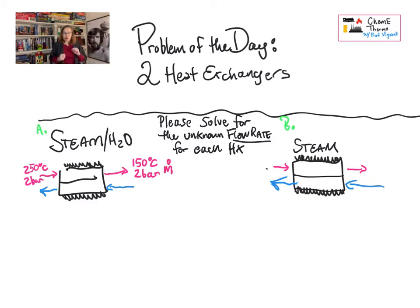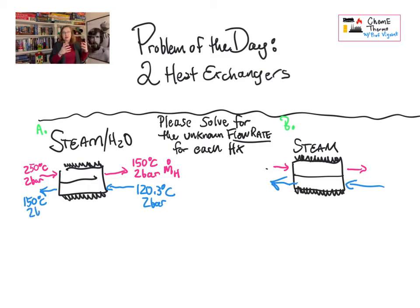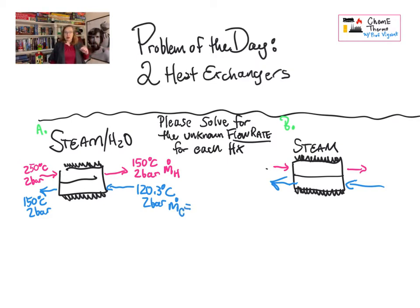We don't know its flow rate — its flow rate is unknown. On the cold side of heat exchanger A, we have steam coming in at 120.3°C. That is 100% steam, so when you look at the steam table that should be right at the bottom of the superheated table — the lowest temperature given on the superheated table for 2 bar. Remember 2 bar is 0.2 MPa. Then the cold stream exits after being warmed up to 150°C. Again everything's at 2 bar, and I'm giving you a flow rate of 5 kg/min on the cold side.